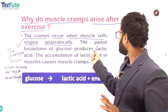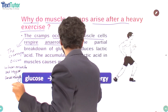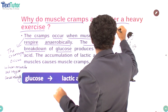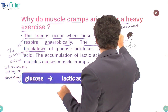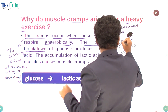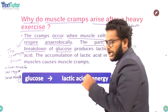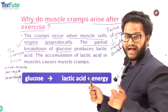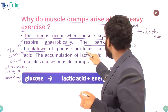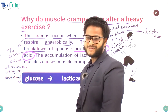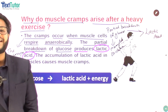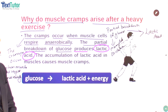The partial breakdown of glucose produces lactic acid. The partial breakdown of glucose — that is what produces lactic acid.